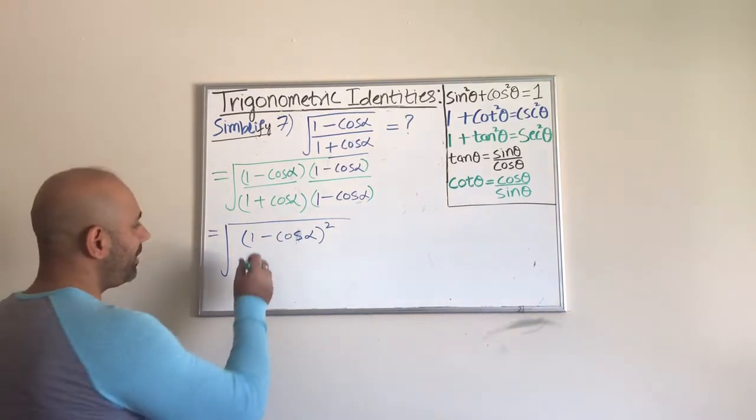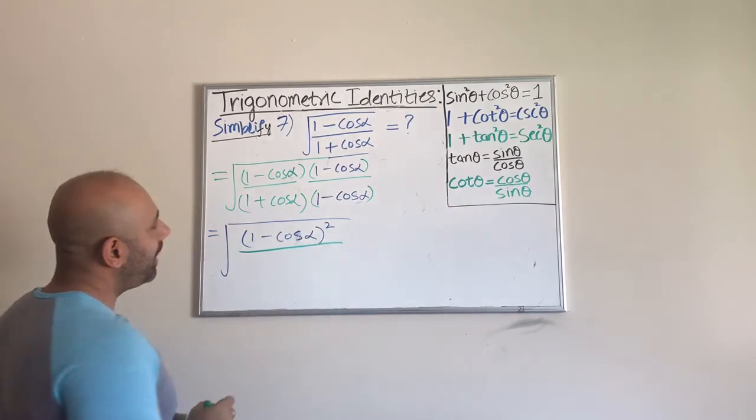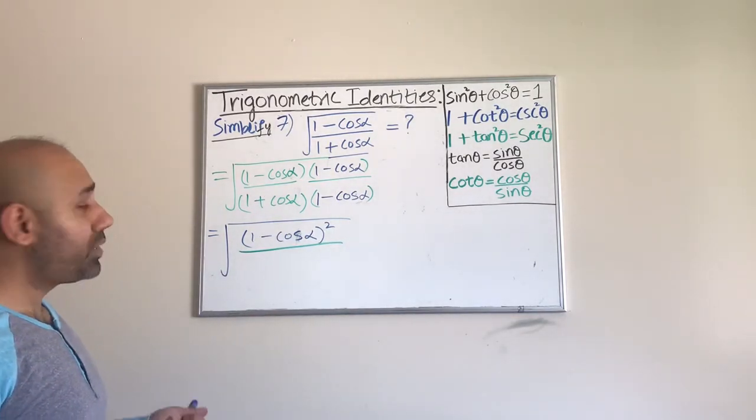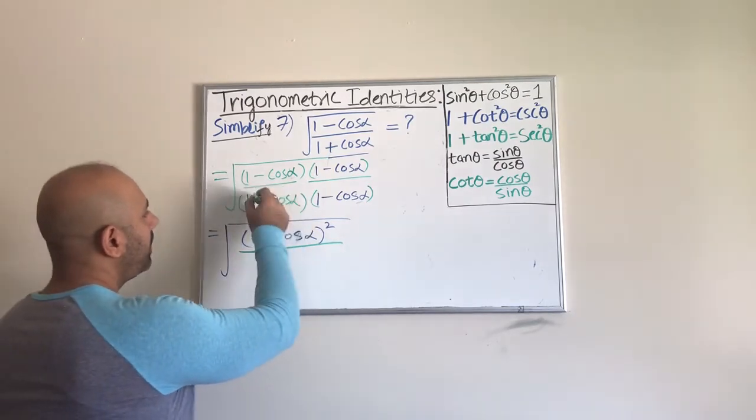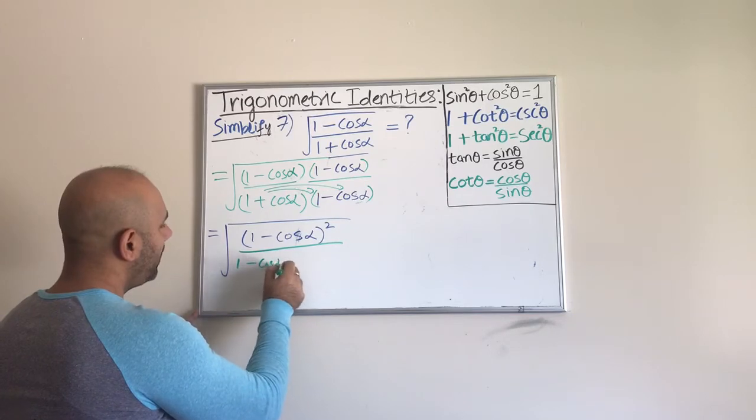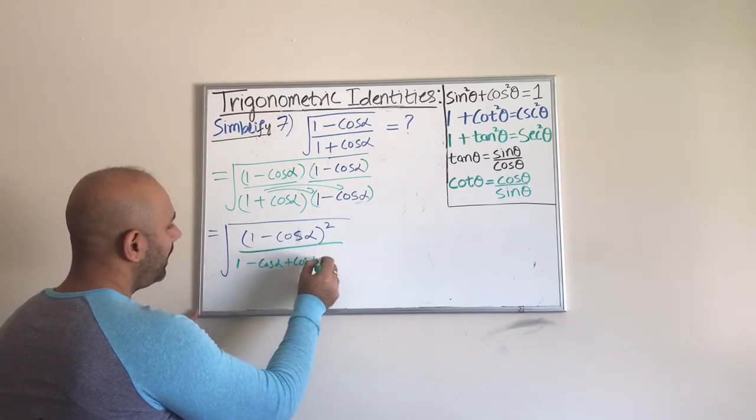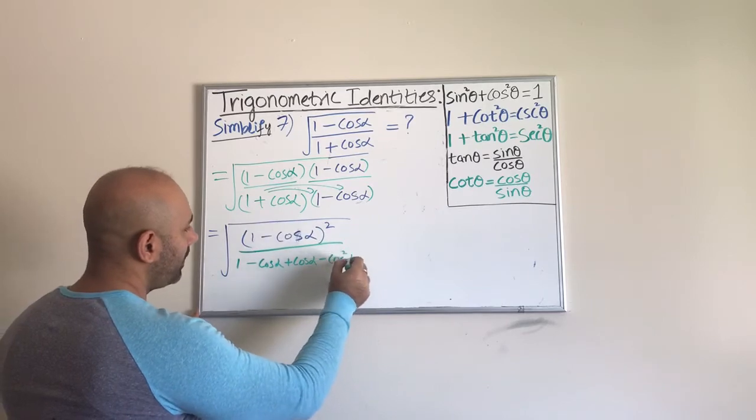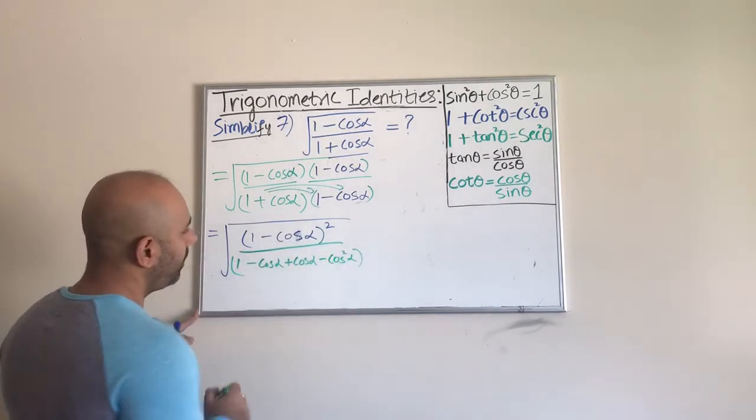Okay, and in the denominator, I am going to actually go ahead and distribute. So it's 1 minus cosine alpha, then plus cosine alpha, and then minus cosine squared alpha.